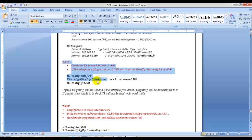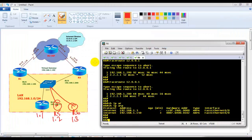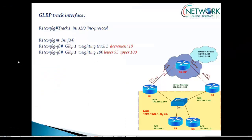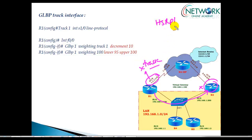The next thing we'll do is understand the tracking method. Like in HSRP and VRRP, we also did the tracking method. Let's take an example: if this interface goes down, we'll verify the tracking configuration in GLBP. Normally, if this interface goes down, Router 1 is still sending hello messages to Router 3, so Router 3 will never know that this interface is going down. That's why we can track this interface — tracking is something we did in HSRP as well as VRRP.